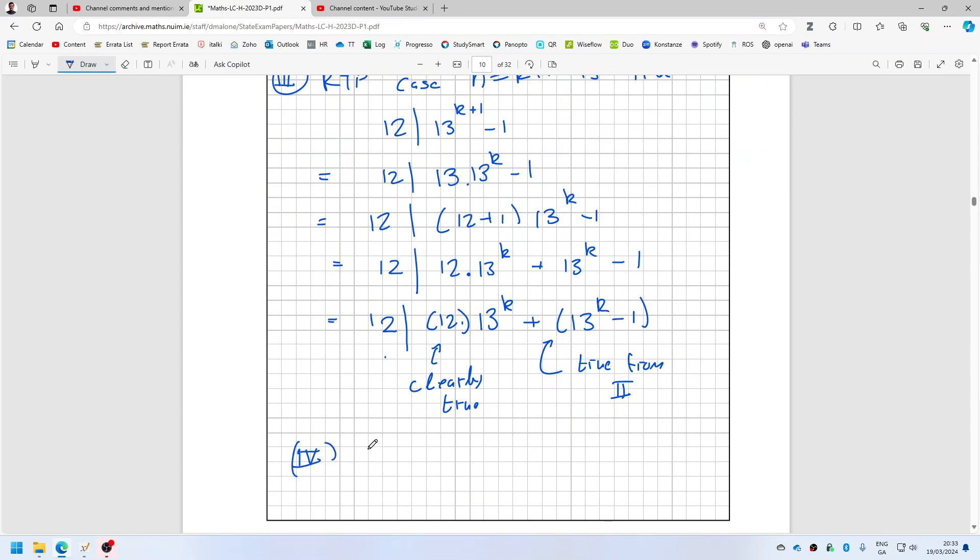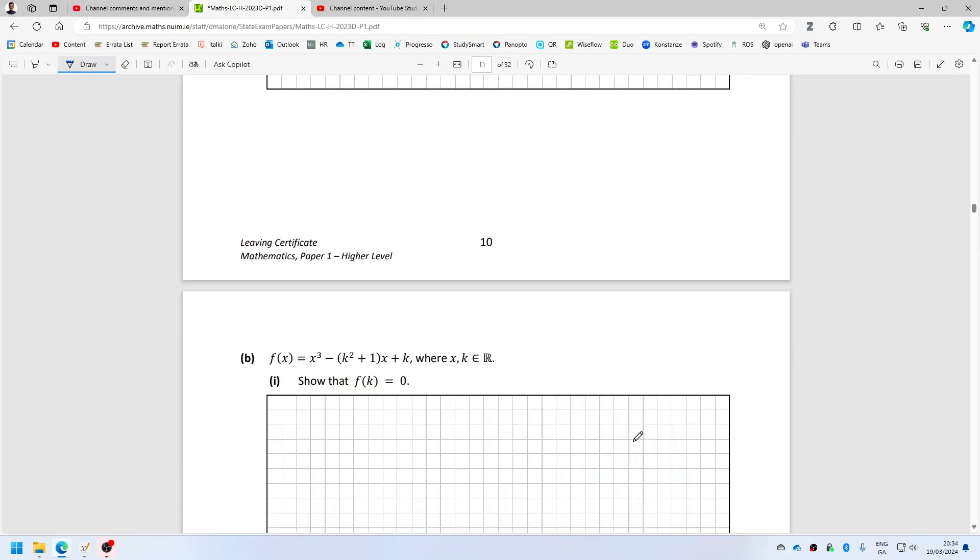The conclusion is: step one plus step two plus step three implies it's true for n equals one, n equals two, n equals three, etc. So basically for all the natural numbers. And that is question four a.